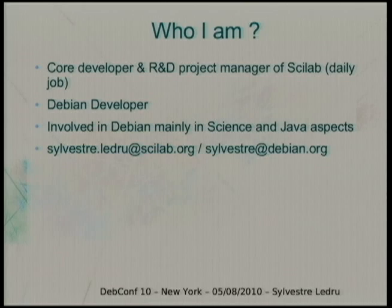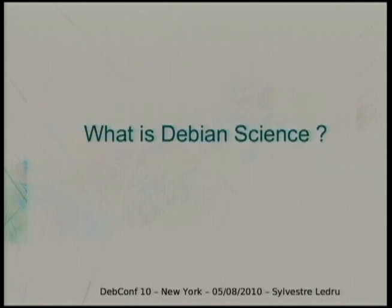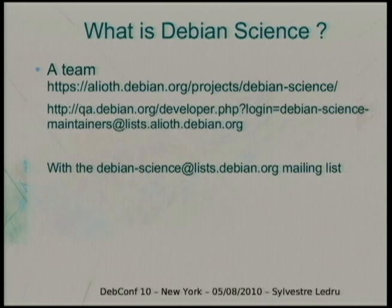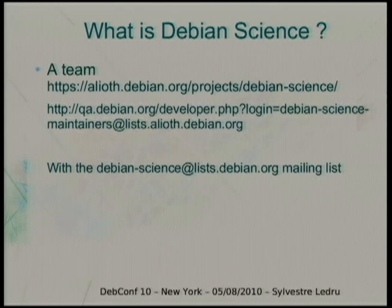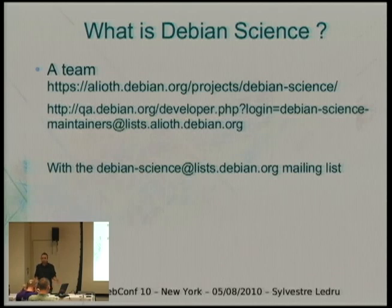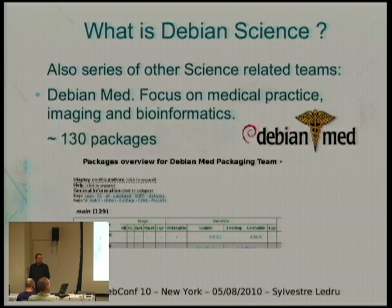I'm mainly involved in science and Java. First, I'd like to explain what Debian Science is, because it's pretty unclear. What I'm working on mainly is the team Debian Science, hosted at Alioth. There are about 70 people registered to this project and we're maintaining about 130 packages. The main mailing list is debian-science@lists.debian.org.